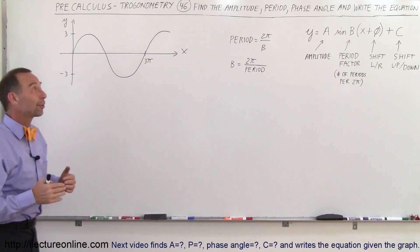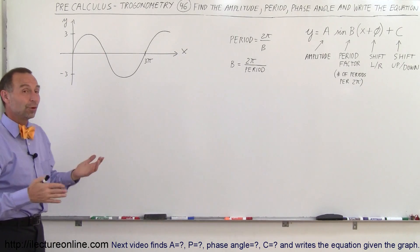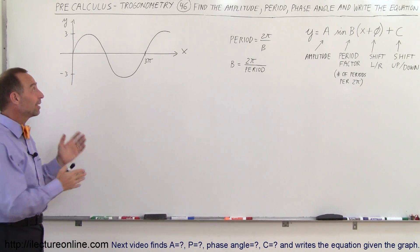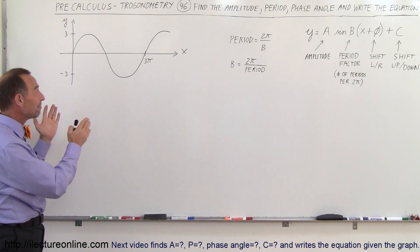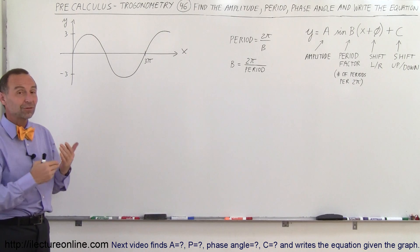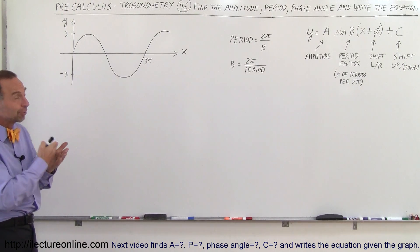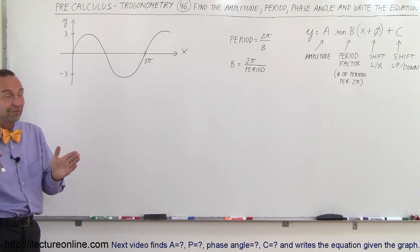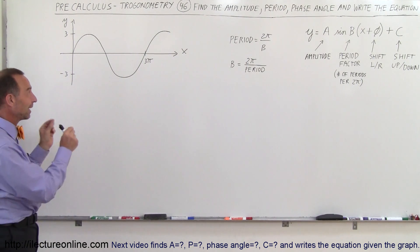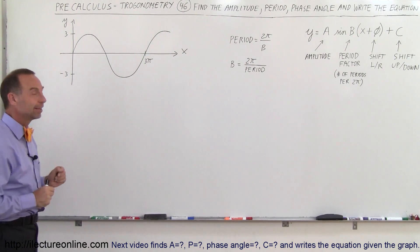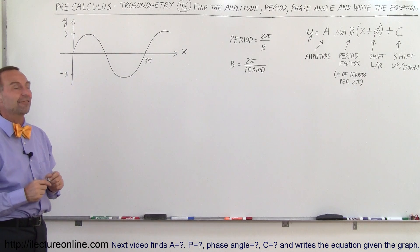Welcome to ElectronLine. Now we're going to reverse the roles — we're going to give you the graph and you're supposed to find the amplitude, the period, the phase angle, and finally the equation that belongs to this graph.